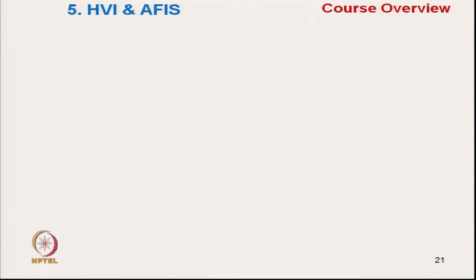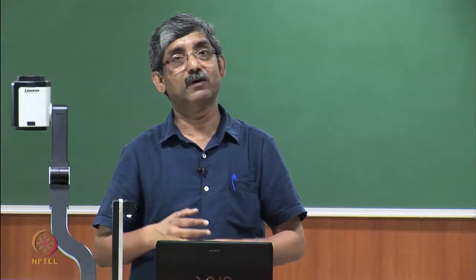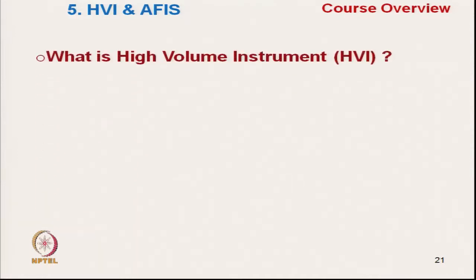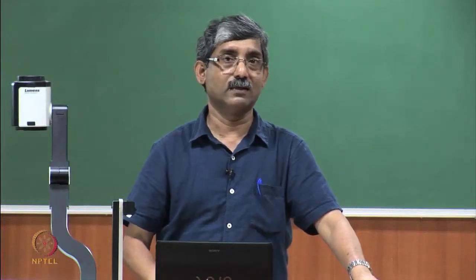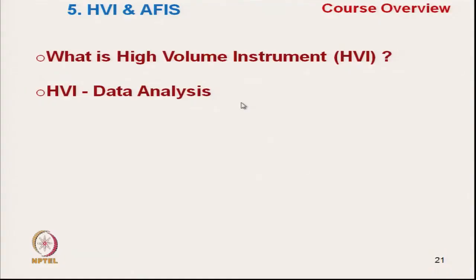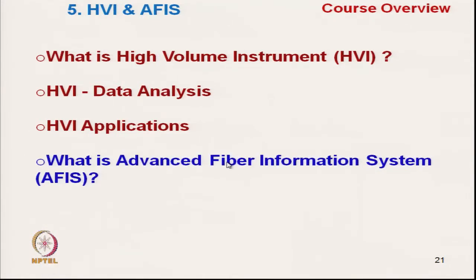Next, we will discuss two methods which are very popular for quick data. One is the High Volume Instrument — HVI — where we test a number of characteristics together: not just length, but length, fineness, strength, and even colour and trash percentage. We will understand the principle of HVI, how to analyse the data, and the application of HVI. The other method is the Advanced Fibre Information System — AFIS — covering data analysis and application of AFIS.